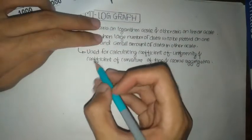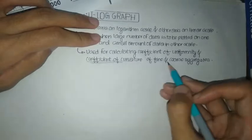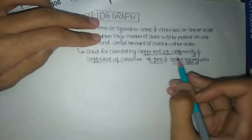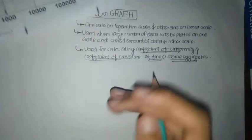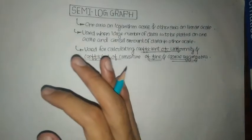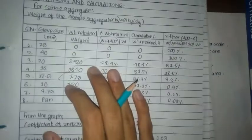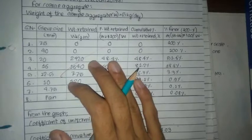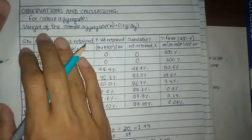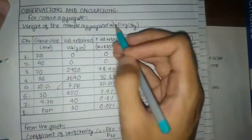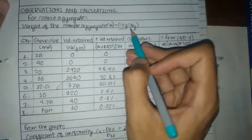For this, we will need a semi-log graph and we will also need the data obtained from sieve analysis of aggregate. Here we have taken the weight of the sample aggregate to be 5 kg dry weight.